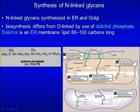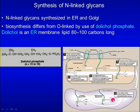The precursor oligosaccharide is transferred to the protein at the asparagine residue by oligosaccharyltransferase present in the ER. N-linked oligosaccharides are processed by removal of specific mannose and glucose residues as the protein moves through the ER. Processing continues in the Golgi and the oligosaccharide chain is completed as either a complex or high-mannose glycan.